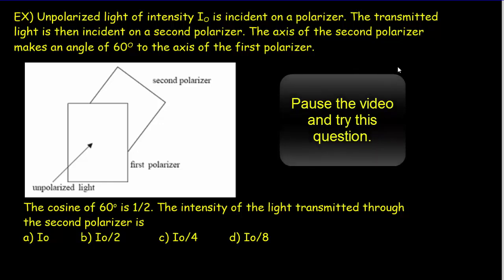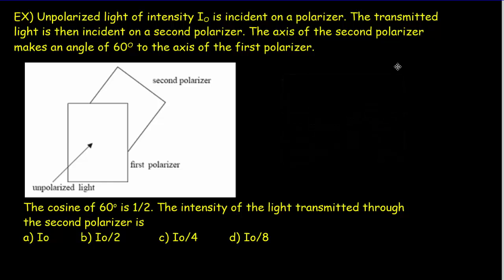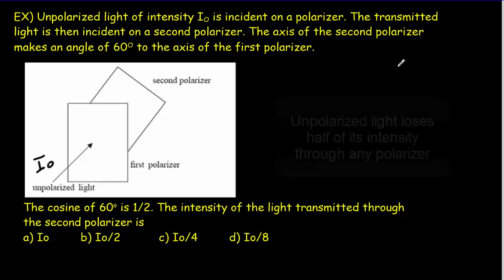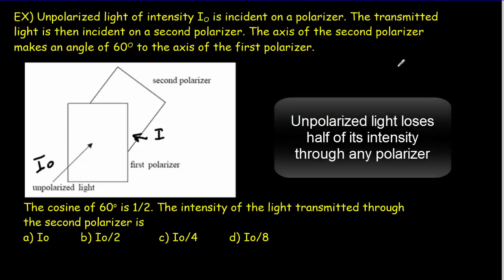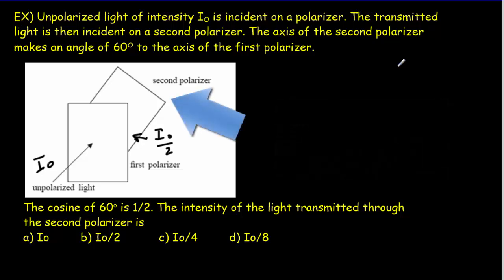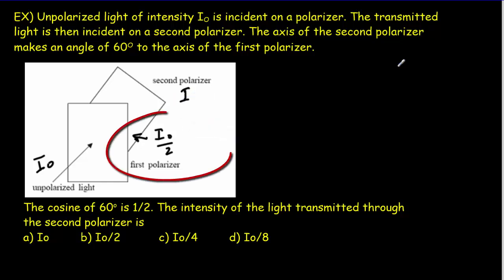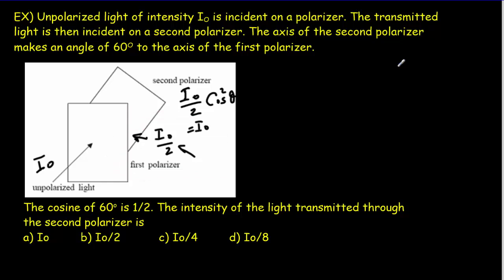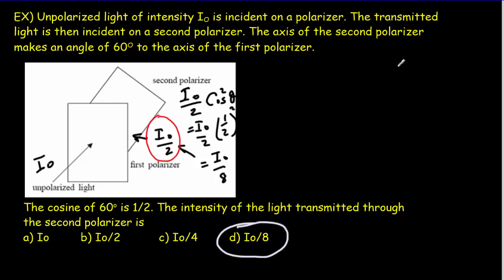Here's a typical IB question: unpolarized light of intensity I₀ passes through two polarizers. As it goes through the first polarizer, the intensity becomes I₀ over 2. Then applying Malus's Law for the second polarizer: I₀ over 2 times cosine squared of 60°. The cosine of 60° is one half, so we get I₀ over 2 times one quarter, giving I₀ divided by 8. The key point is not to forget that the light loses 50% through the first polarizer before applying Malus's Law for the analyzer.